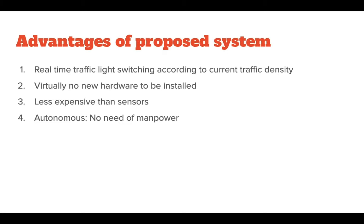The advantages of this system are as follows. It enables real-time traffic light switching according to the current traffic density. It requires virtually no new hardware, as CCTV cameras already installed at traffic signals are used. It is less expensive than sensors, and it is autonomous so there is no need for manpower.